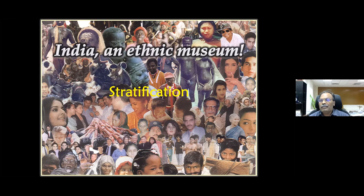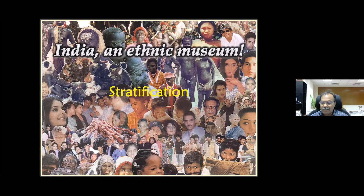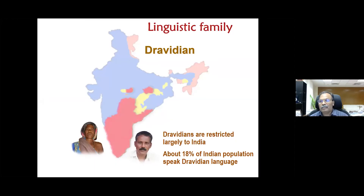That's the diversity we have in India and South Asia. What is also unique is that the populations are very well stratified in many ways. One of the stratifications is based on language — there are several language groups, particularly four major linguistic groups.